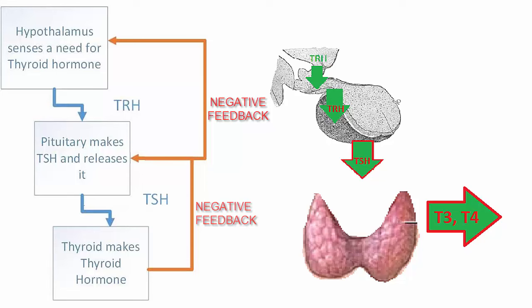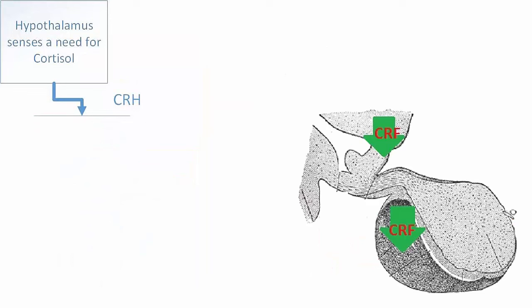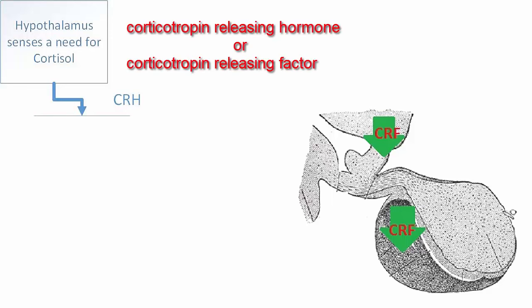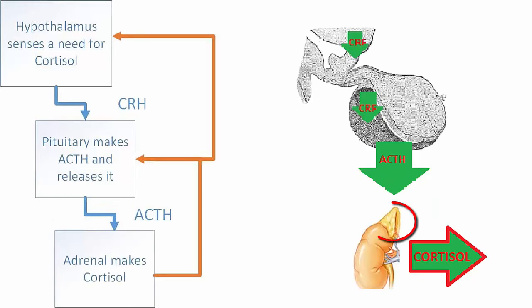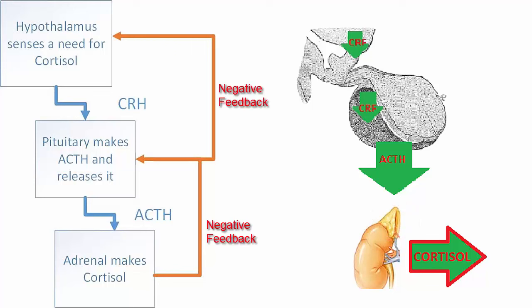The hypothalamus senses the need for cortisol. It makes CRH — corticotropin releasing hormone, also called CRF — and dumps it into the capillary network. When it gets to the anterior pituitary, it triggers the release of ACTH, adrenocorticotropic hormone. The ACTH goes into the general circulation and, when it gets to the adrenal gland, triggers the formation and release of cortisol. The cortisol then circulates in the body and decreases the formation of CRH and ACTH.